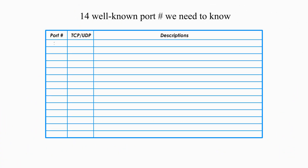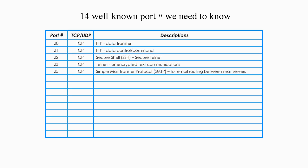In the next several minutes, I will briefly talk about 14 well-known port numbers we need to know. Port 20 is for FTP data transfer. Port 21 is for FTP data control or command. Port 22 is for secure shell, or the secure version of telnet. Port 23 is for telnet, used for unsecure text communications. Port 25 is for Simple Mail Transfer Protocol, SMTP, basically used to send emails.